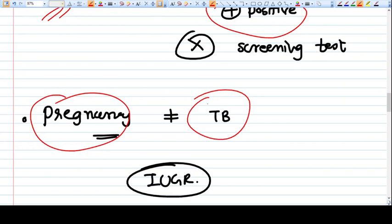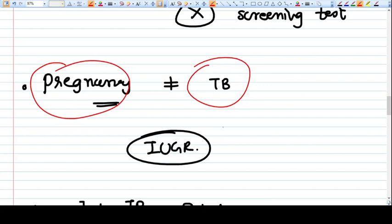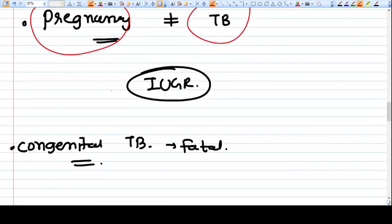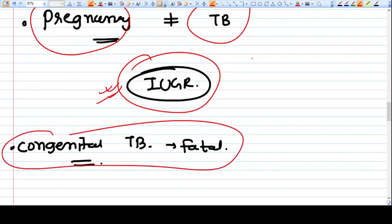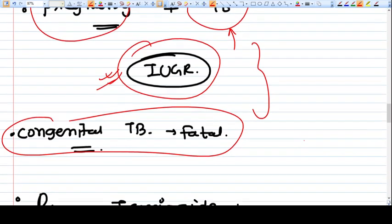Now, IUGR sometimes, congenital TB, and sometimes IUGR - both of these factors can sometimes be seen in pregnancy along with tuberculosis. After all, they are two totally different entities. So if a person has TB and is also having pregnancy, there is actually no effect of TB on pregnancy generally.